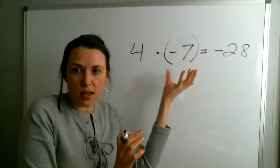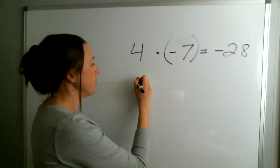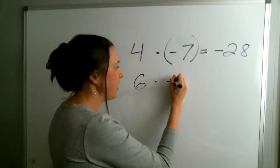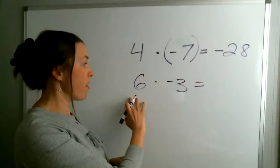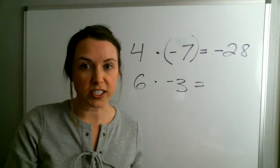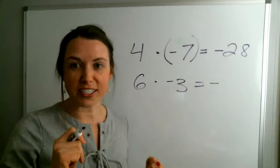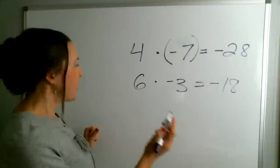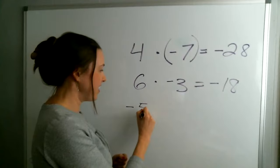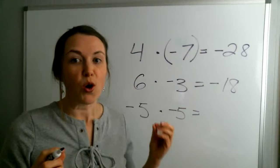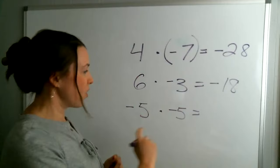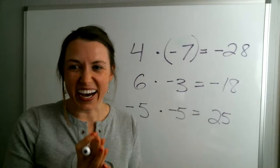Let's do another one: six times negative three. We have a positive and a negative, so positive times a negative means we're going to get a negative. Type your answer in the chat — negative 18. Remember, a negative times a positive is going to be a negative. Let's do one more like this: negative five times negative five. I have a negative times a negative — what's my answer going to be? Positive! So we just have 25.